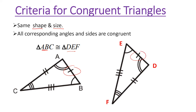Angle C should be congruent to angle F. Angle C has three congruence marks and angle F has three congruence marks. Again, our congruency statement matches those triangles. The criteria is that all corresponding angles and sides must be congruent.